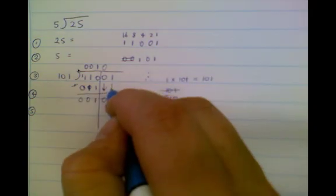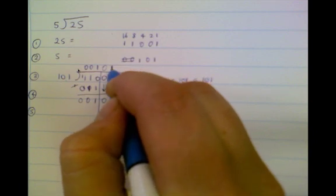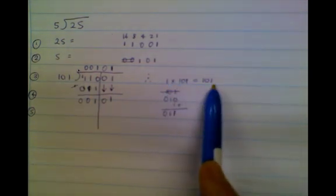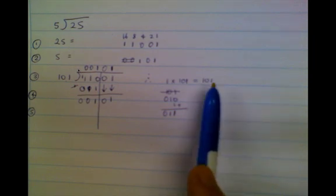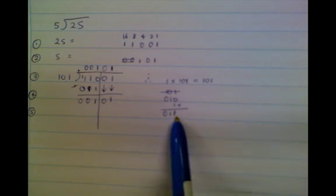I continue the process. Obviously I need some help, so I've got to drag down this 1 here. Now I have a decimal equivalent of 5. Does 5 go into 5? Yes it does. So I need to put my 1 here and continue my process as before.